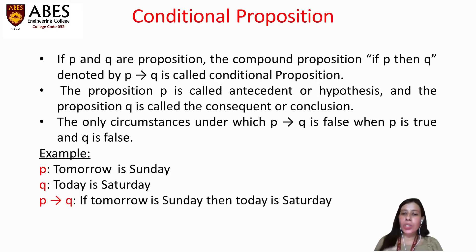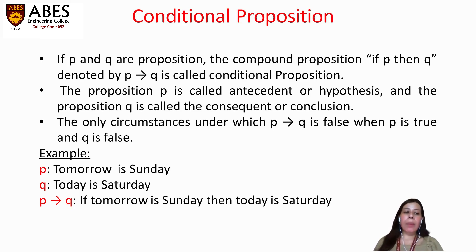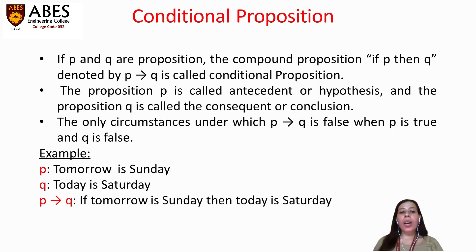Next is the conditional proposition. If P and Q are propositions, then the compound proposition 'if P then Q,' denoted by P → Q, is called the conditional proposition. The proposition P is called the antecedent or hypothesis, and the proposition Q is called the consequent or conclusion. The only circumstance under which P → Q is false is when P is true and Q is false. For example, P is 'tomorrow is Sunday' and Q is 'today is Saturday,' so P → Q means 'if tomorrow is Sunday then today is Saturday.'